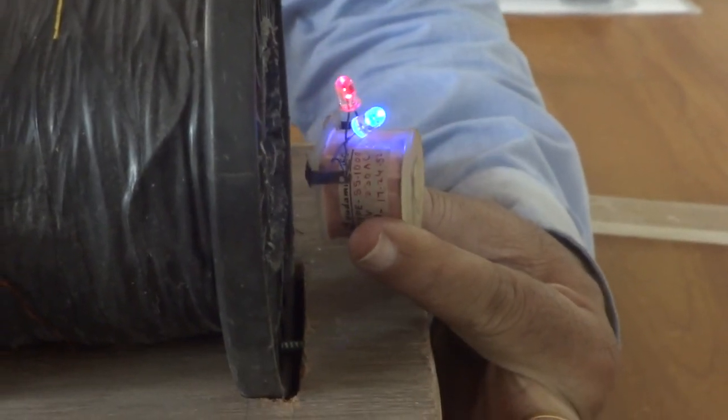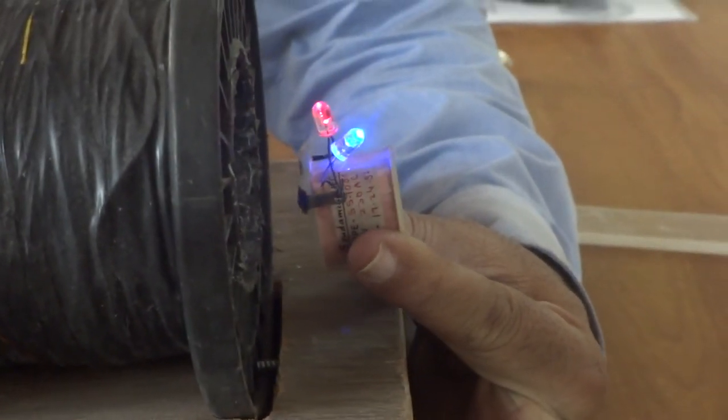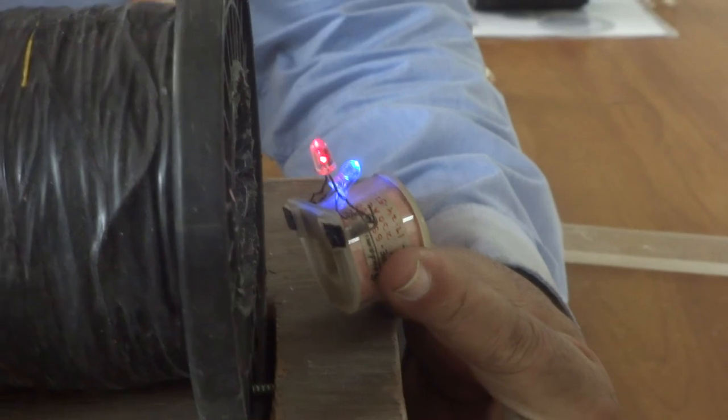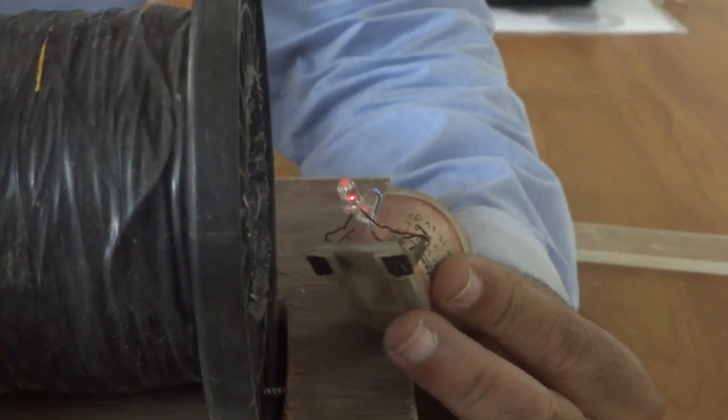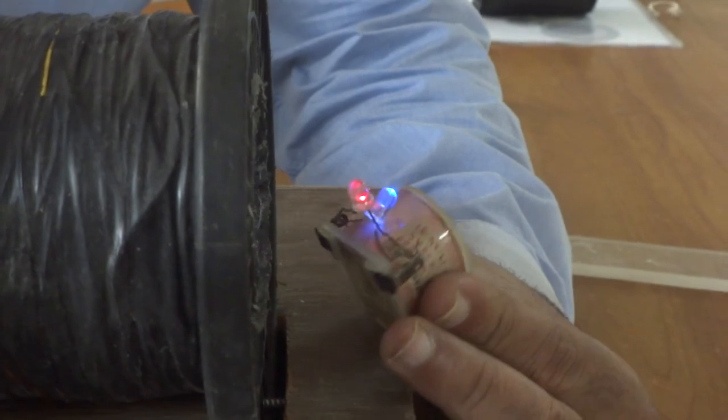So here, one can understand the mutual induction is depending on the geometrical alignment of the primary and secondary coils.